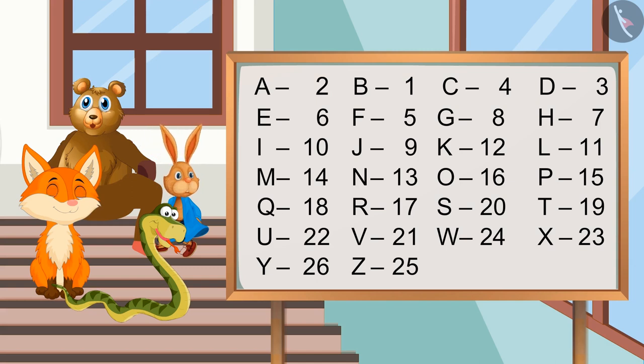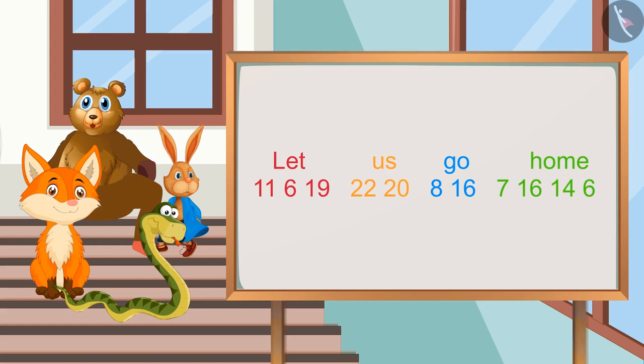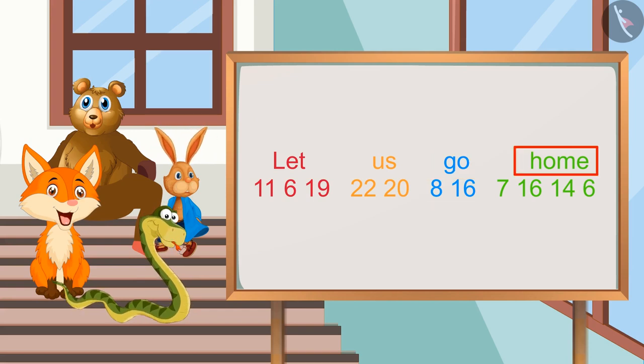Yes, this is the order of bholu. 'Let' will be eleven, six, and nineteen. 'Us' will be twenty-two and twenty. 'Go' will be eight and sixteen. 'Home' will be seven, sixteen, fourteen, and six.